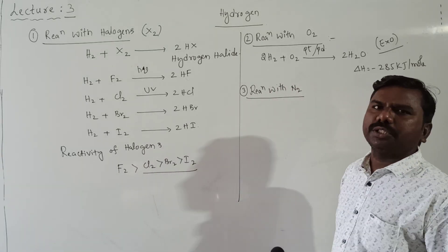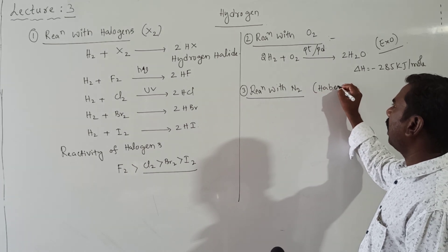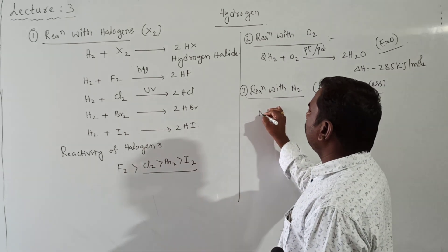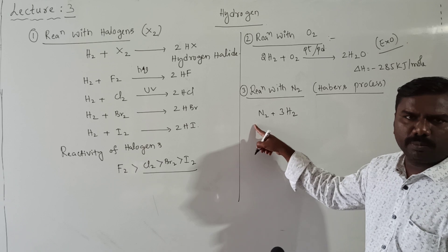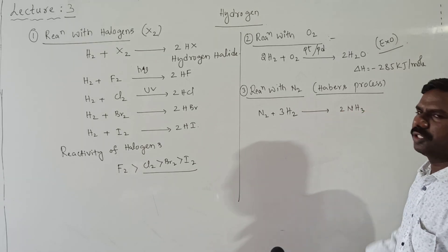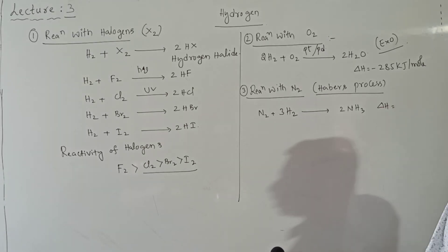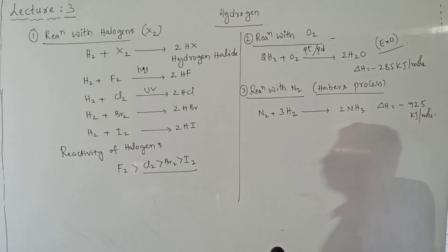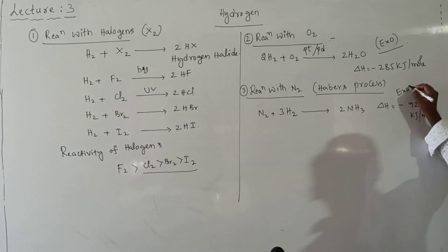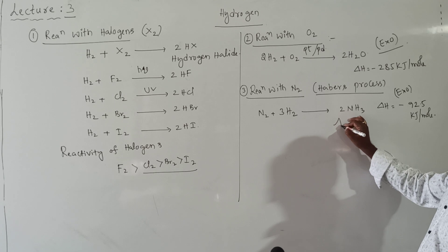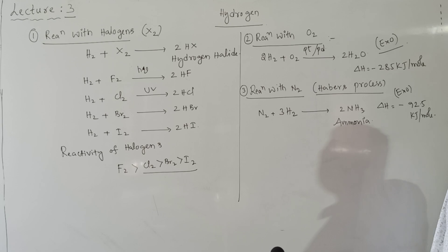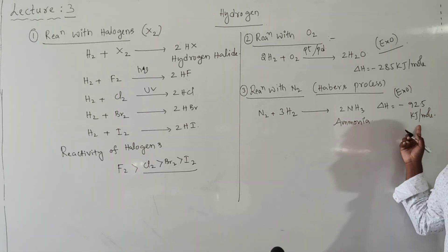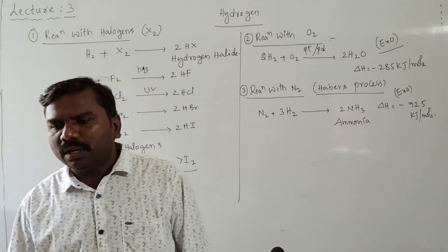Third: reaction with nitrogen. This process is called the Haber process, very important in the nitrogen family. 3H₂ + N₂ → 2NH₃. The enthalpy change ΔH = −92.5 kJ/mol. This is also an exothermic reaction. The compound formed is ammonia.